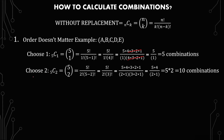The next is 5C2, which equals 5 choose 2, or 5 factorial over 2 factorial times 3 factorial. Expanding: 5 times 4 times 3 times 2 times 1 over 2 times 1 times 3 times 2 times 1. The 3 times 2 times 1 cancels out, giving us 5 times 4 over 2 times 1, which gives us 10 combinations.